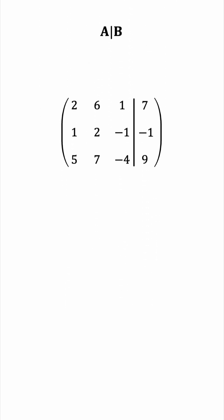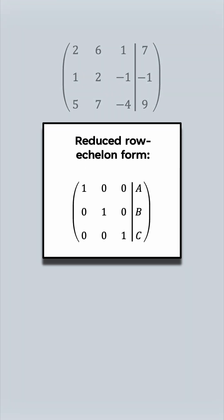And now we'll use a number of row operations to transform this augmented matrix into what we call the reduced row echelon form, allowing us to immediately read the three solutions.